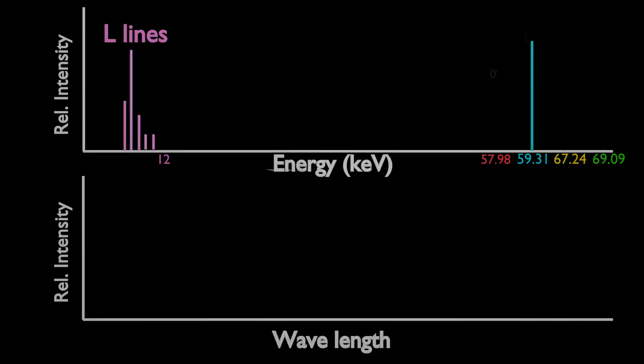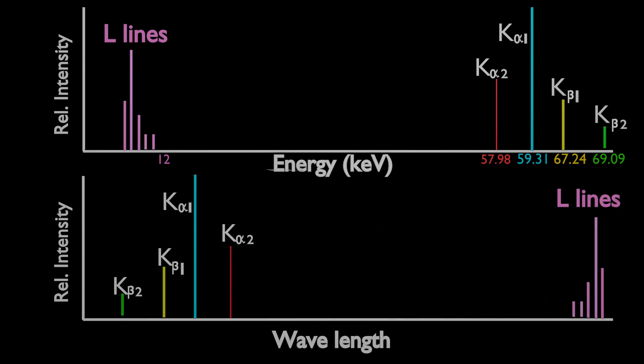K alpha 1 is the most intense characteristic X-ray. K alpha 1 is almost twice intense than K alpha 2. The relative intensity of the K X-rays are greater than that of L, M, and characteristic X-rays. If we draw spectrum with wavelength, the order of spectral lines will reverse as energy and wavelength are inversely proportional.